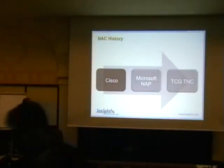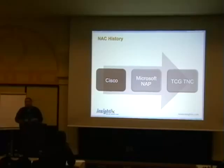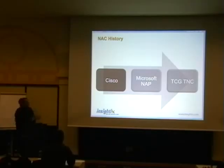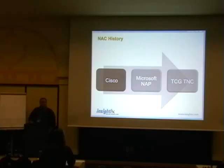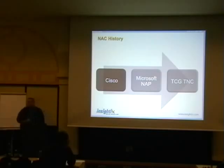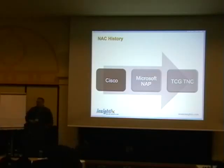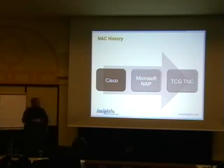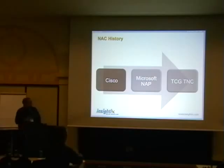The first company who basically identified this problem was Cisco Systems back in 2003. If you remember the Blaster worm, shortly after Cisco announced an initiative to check the compliance of a device when it is connected to the network — making sure that it has the right patches, antivirus updates, and so forth. That was the first world initiative to actually enroll network access control. From that point on, it just evolved. There are other initiatives like Microsoft Network Access Protection and the Trusted Computing Group's TNC.